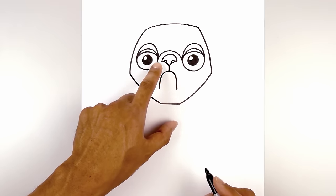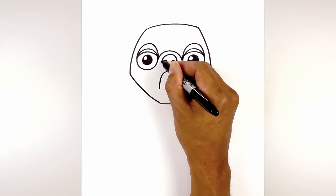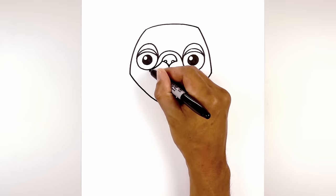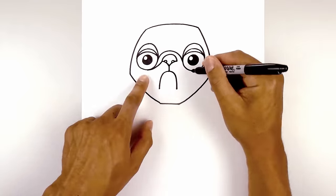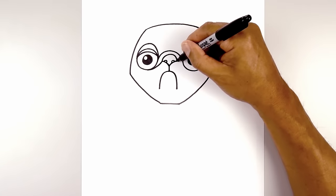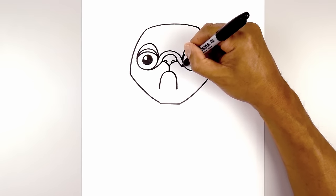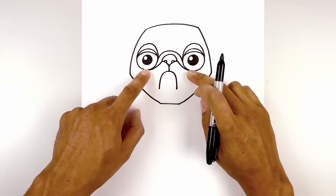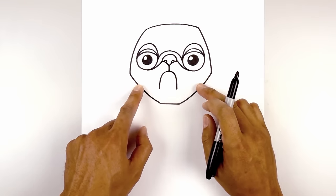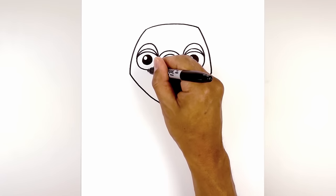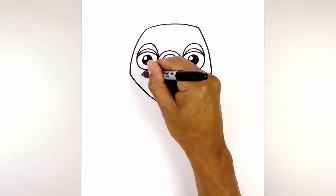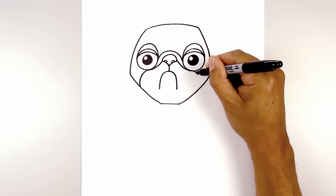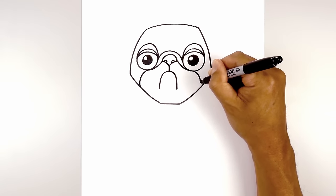Now from the bottom corners of the nose, curve out and over underneath the eye. Do the same thing on the right side. From that same point we're going to curve around the cheeks and then down, pulling that down towards the bottom edge of the hood.